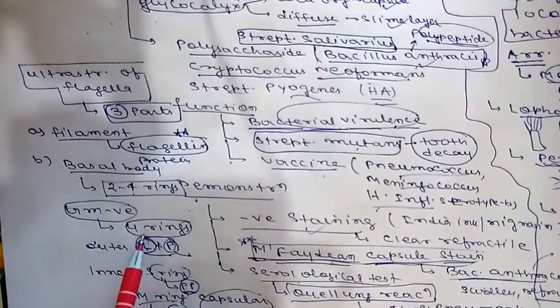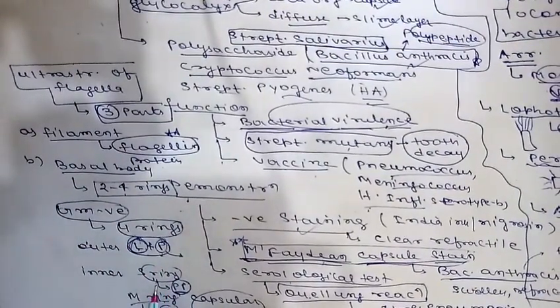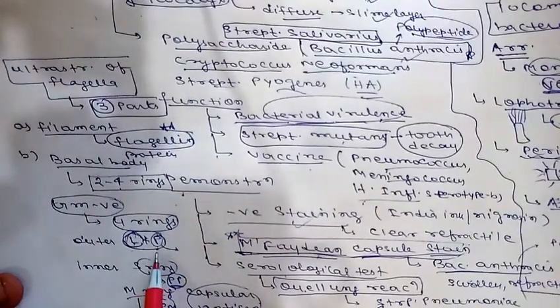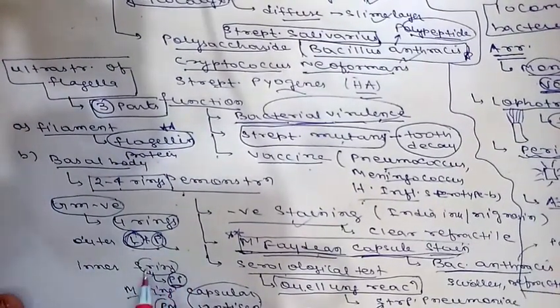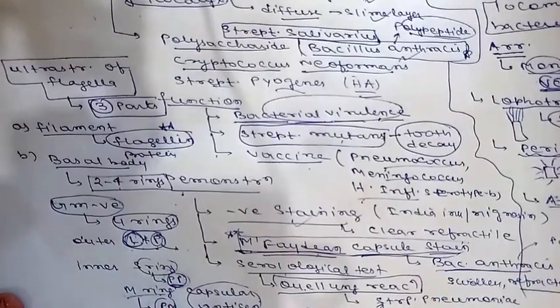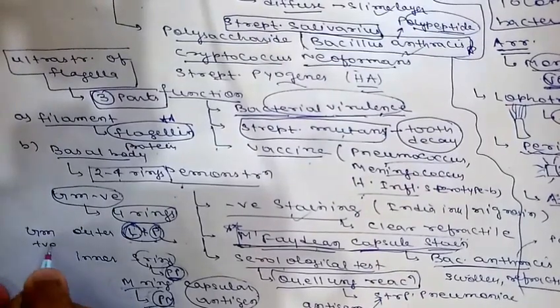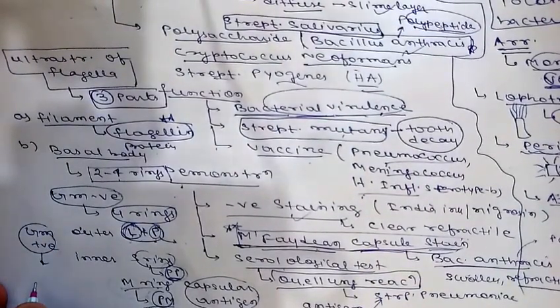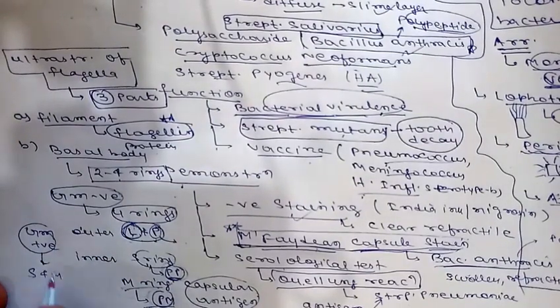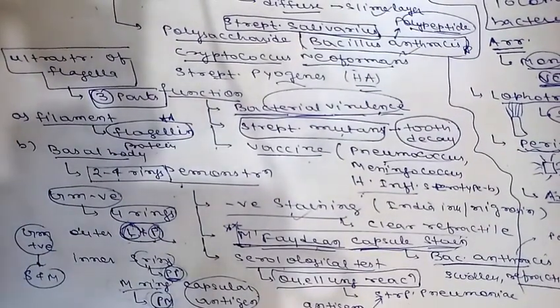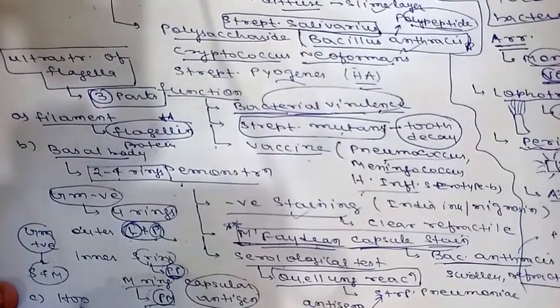So in gram-negative bacteria: L ring — lipopolysaccharide layer; P ring — peptidoglycan layer; S ring — periplasmic space; M ring — plasma membrane. In gram-positive bacteria there are only two basal body rings, the S and M rings (inner rings only). The third flagellar part is the hook.